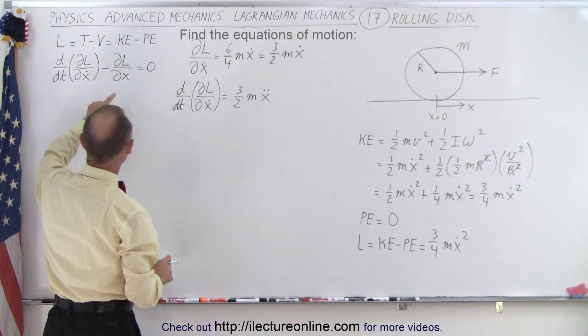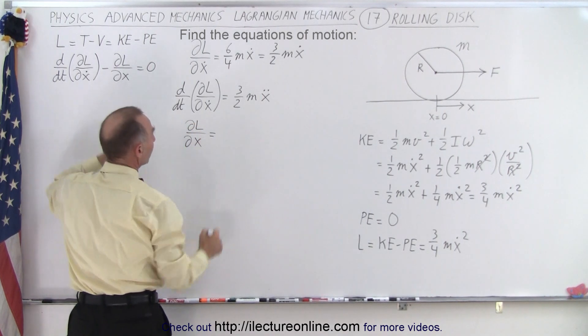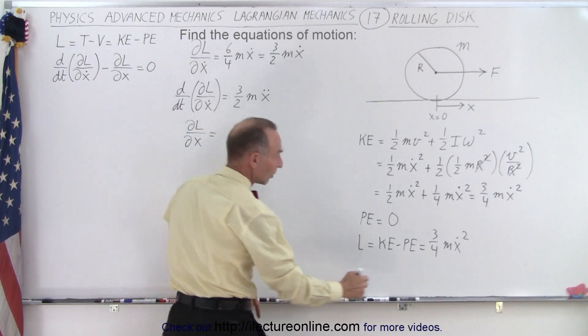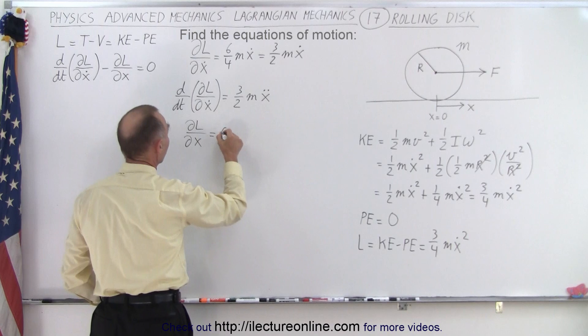And then we're going to take the derivative, the partial derivative of the Lagrangian with respect to x. But notice that is taking the partial derivative of this with respect to x, there is no x variable, so therefore that is equal to zero.